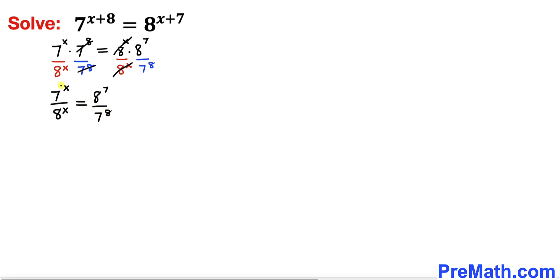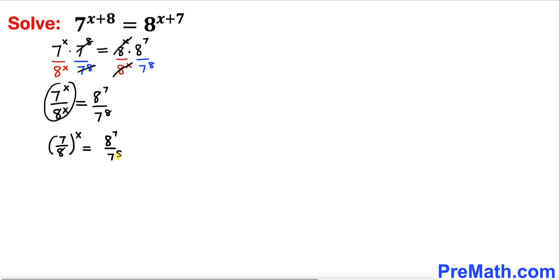So the left hand side simplifies to (7/8)^x, and the right hand side is 8^7 divided by 7^8.